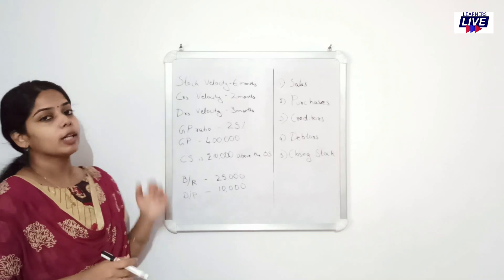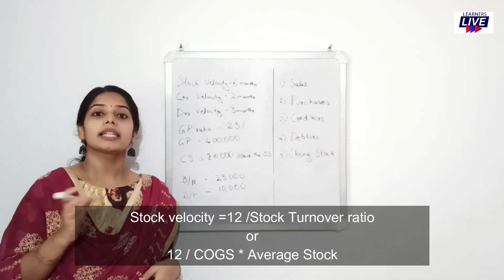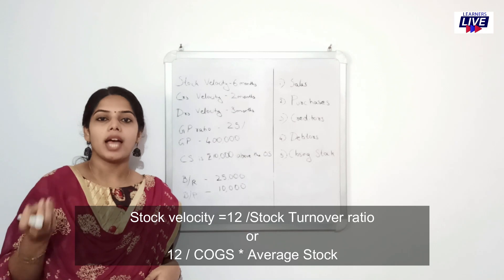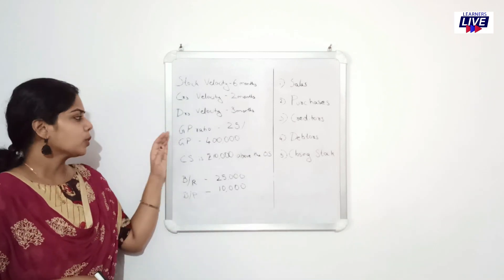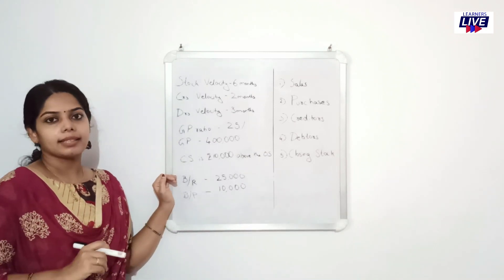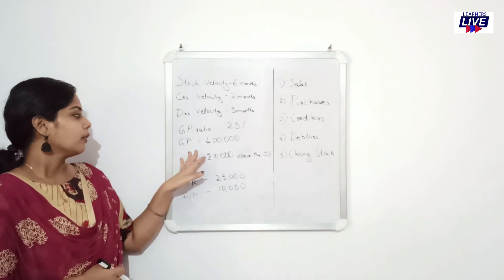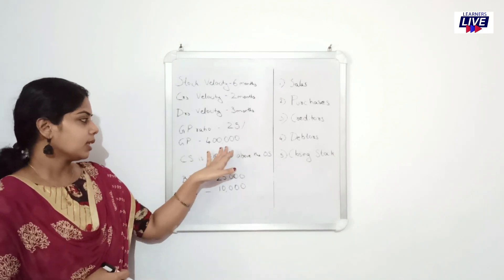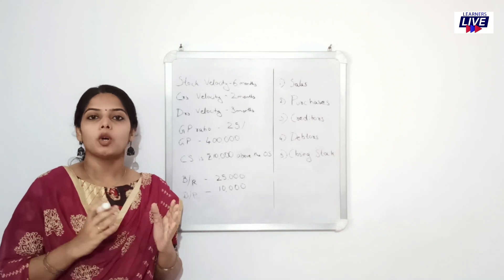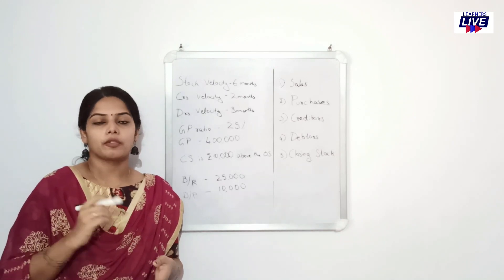Now, 12 divided by stock turnover ratio. That means 12 divided by cost of goods into average stock. We can add the cost of goods. If we say, what is gross profit? We have the sales already calculated. The cost of goods is sales minus gross profit.